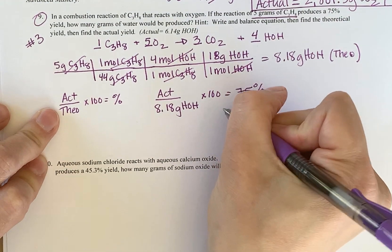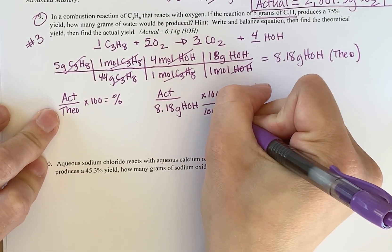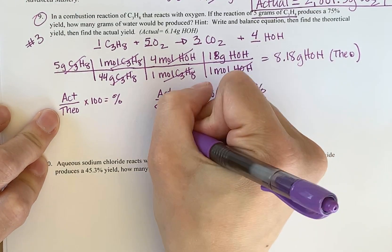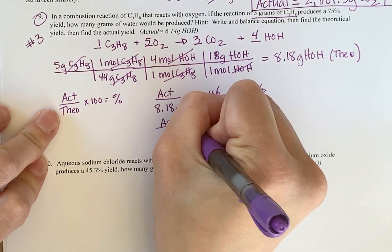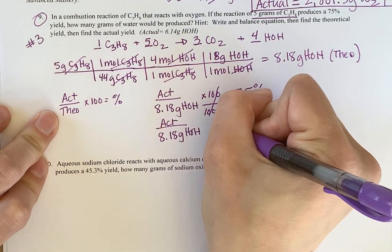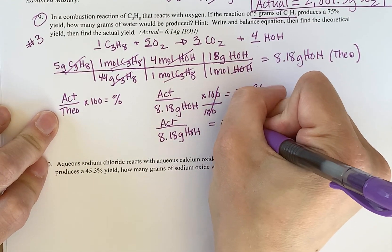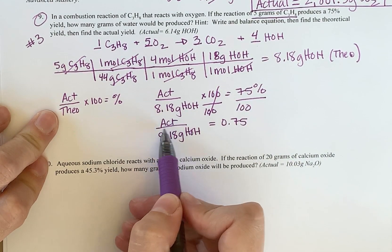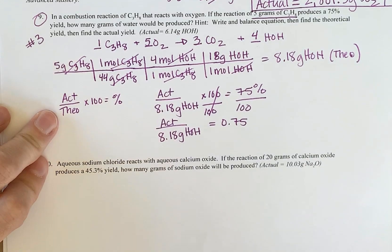My first step is to divide by 100. And remember, if I do it on one side, I have to do it on the other. That gives me my actual over 8.18 grams of HOH is equal to 0.75. That took it out of my percent. So again, I'm trying to solve for like X here.